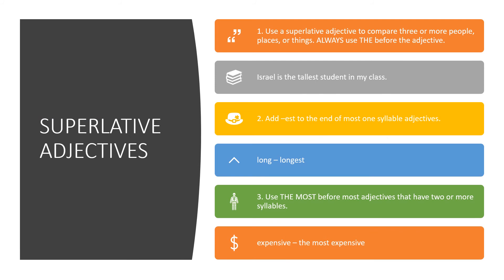Sometimes adjectives are used to compare more than two nouns. Here are the rules for superlative adjectives. When you're using an adjective to compare three or more people, places, or things, always use the before the adjective. For example, Israel is the tallest student in my class. For adjectives that end in one syllable, you must add -est to the end. Long becomes longest. For example, this month has been the longest month so far. For adjectives that have two or more syllables, you do not add -est, but you use the word most in front of it. He has the most expensive computer in the class.